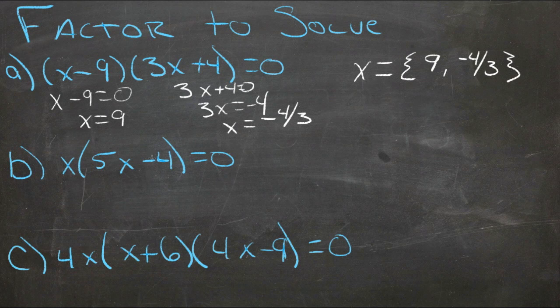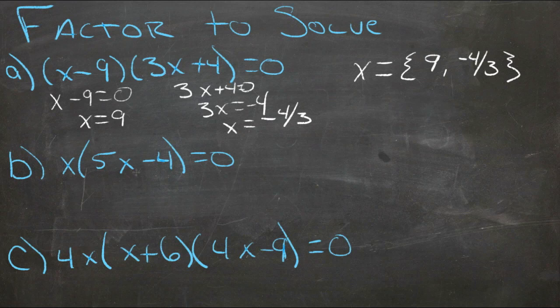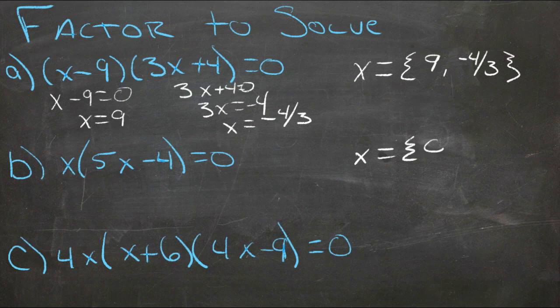For our second example, one of our solutions is just zero, because here, x is by itself, so if it were zero, it would make the whole statement true. So one of our solutions here is that x could be zero.